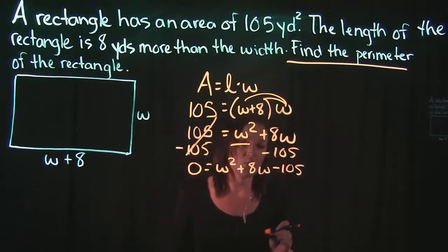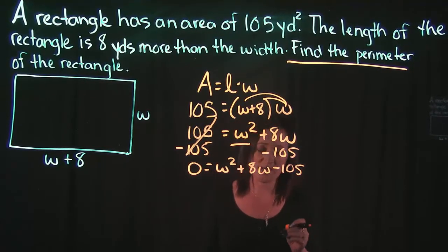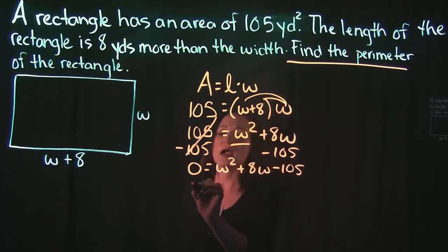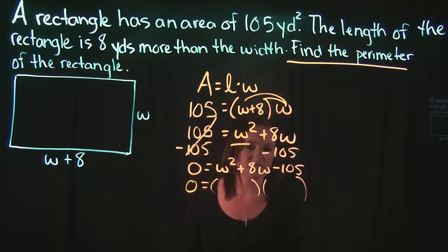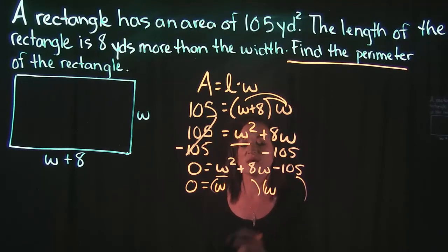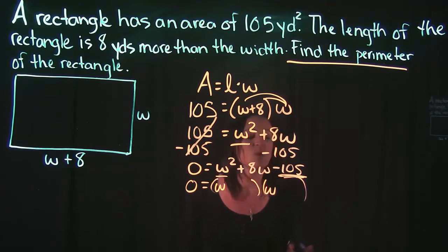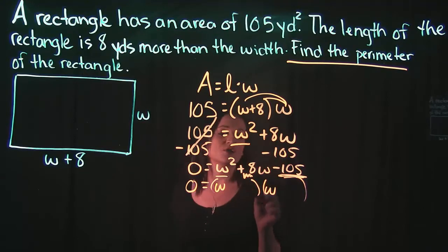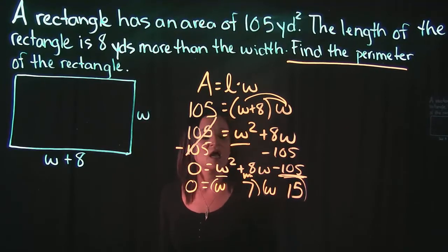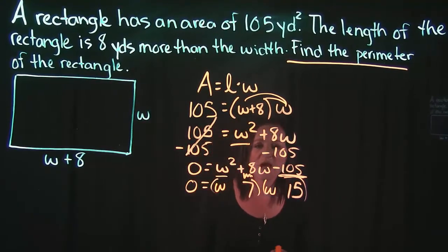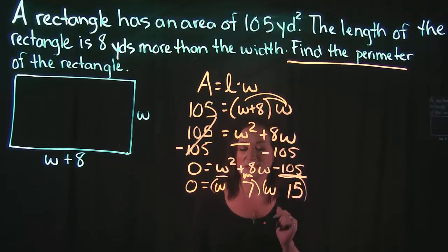In order to solve this quadratic equation I want to factor this thing. I'm going to factor this into two parentheses. Looking at my first term that's W squared, the only way to get W squared is W times W. Then we look at our last term 105 and think what multiplies to get 105 but adds or subtracts to get 8. Those magic numbers are 7 and 15. 7 times 15 is 105. 15 minus 7 equals 8.